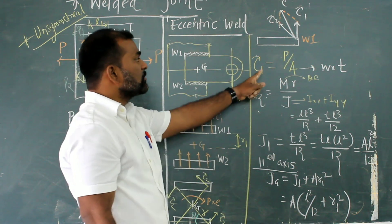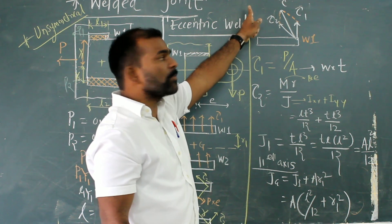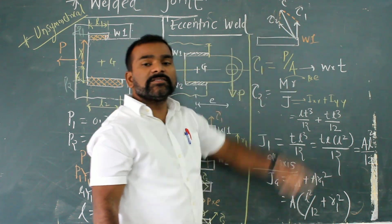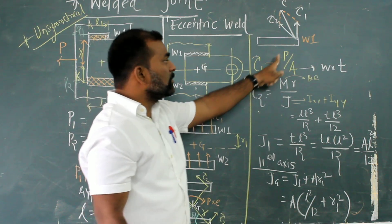Primary force is always opposite to the direction of the load, that is tau 1. Tau 2, secondary force, perpendicular to the radius. Remaining is called the resultant. Now, tau 1, primary shear stress, load by area.